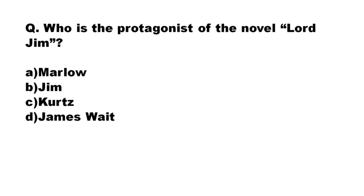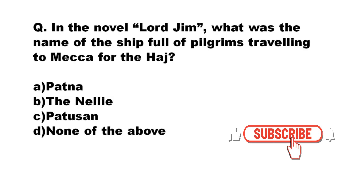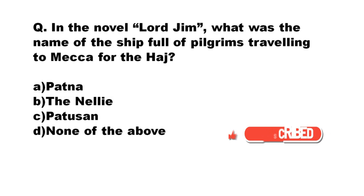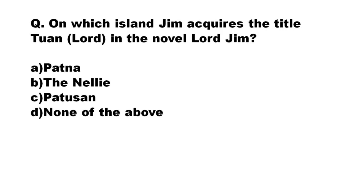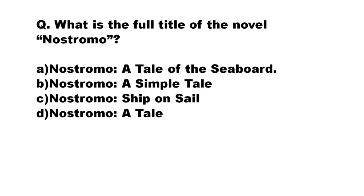Our next question: who is the protagonist of the novel Lord Jim? The options are Marlow, Jim, Kurtz, James Wait. The correct answer is option B: Jim. Our next question: in the novel Lord Jim, what was the name of the ship full of pilgrims travelling to Mecca for the Hajj? The options are Patna, the Nellie, Patusan, none of the above. The correct answer is option A: Patna. Our next question: on which island does Jim acquire the title Tuan, meaning 'lord'? The correct answer is option C: Patusan.